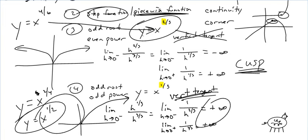To summarize: use your limits if you're not sure. Otherwise, recognize absolute value as a corner; a piecewise function could be a corner or not continuous; y = x^(2/3) — odd root, even power — is a cusp; and y = x^(1/3) — odd root, odd power — is a vertical tangent. For x^(1/3), the graph has an undefined slope at x = 0, which is why there's a vertical tangent there. That's a pretty fast lesson — just identifying whether something is differentiable using the informal method. Adios, math fans!